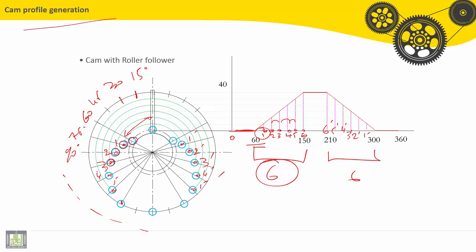So the point 1, 2, 3, 4, 5, 6 and 1 dash, 2 dash, 3 dash, 4 dash, 5 dash, 6 dash are the positions of the center of the roller.